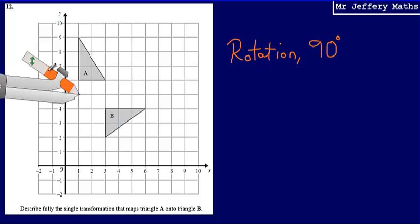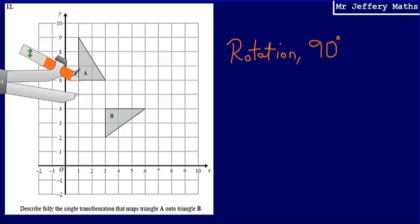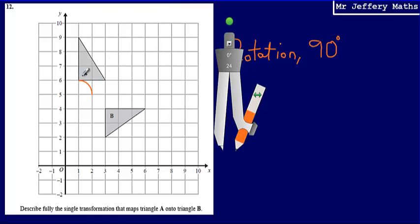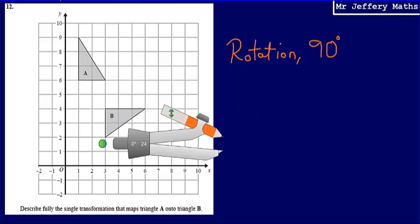1, 5, and I'm just going to open up the compass wide enough so that it fits onto one of the points on triangle A. So what I'm now hoping is that if I rotate, if I turn this compass 90 degrees, that that point that I have marked on A, that will map onto the corresponding point on B. So what I can see when I do this, if I rotate it 90 degrees, is that that does not work. I can see that that point is not mapping onto point B. So let's try again.